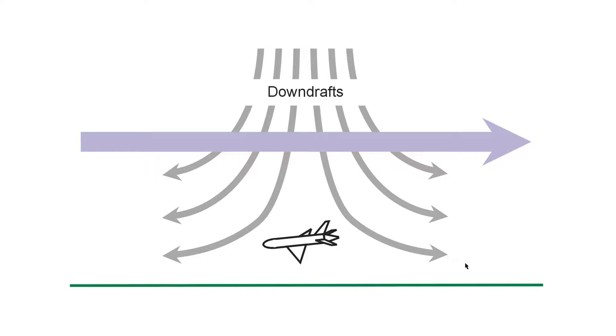So suppose an aircraft is trying to land on a runway, shown again by the green line, and one of these downdrafts happens to hit. The aircraft will first encounter a strong headwind which will increase its airspeed considerably, causing it to speed up in effect and perhaps try to gain altitude.